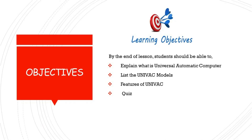Before we move deeply into the topic, let's look at the objectives of the course. By the end of this lesson, students should be able to explain what is Universal Automatic Computer, list some of the models of the UNIVAC, list some of the features of the UNIVAC, and lastly, answer some questions.